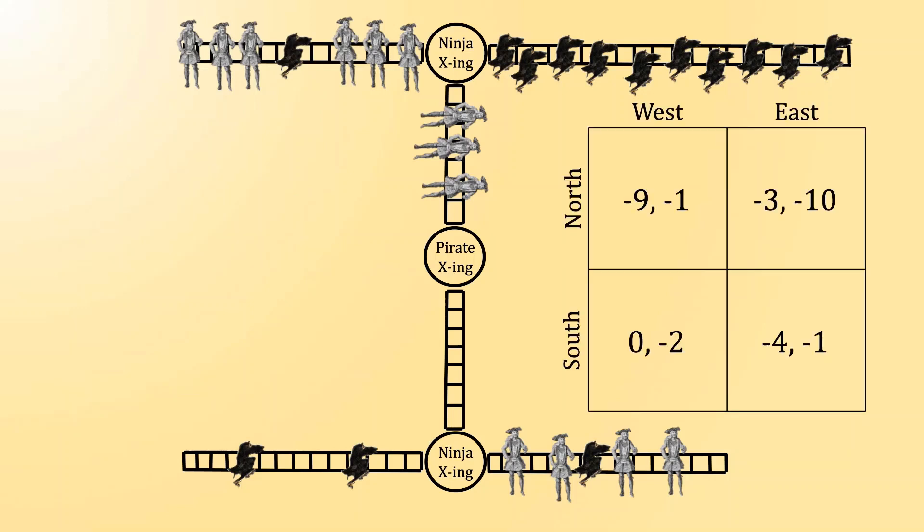To analyze this further, it might help to condense all of the information into a nice matrix. The pirate is choosing whether to go north or south, and the ninja is choosing whether to go west or east. The first payoff is the number of pirates hit. The second payoff is the number of ninjas hit.